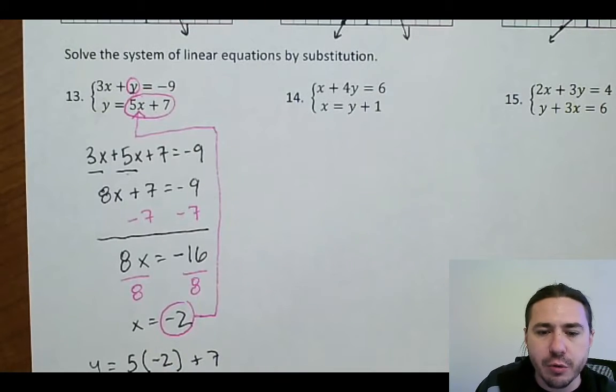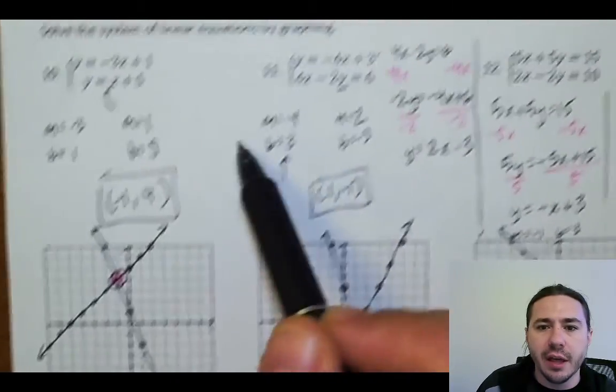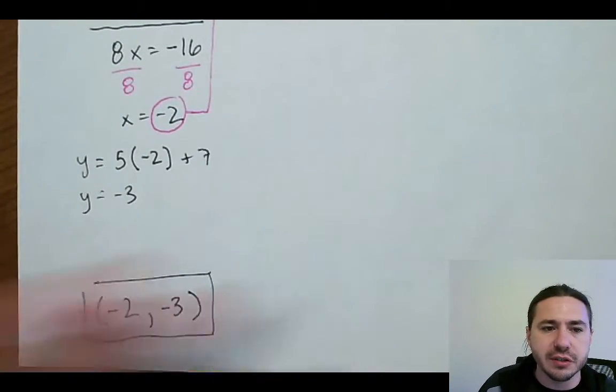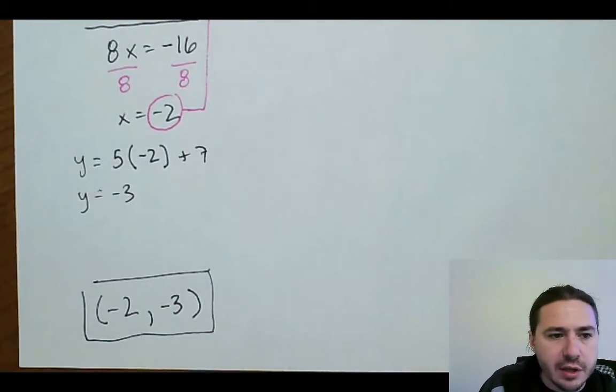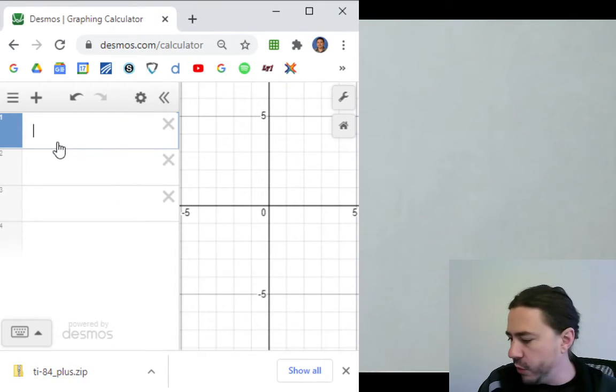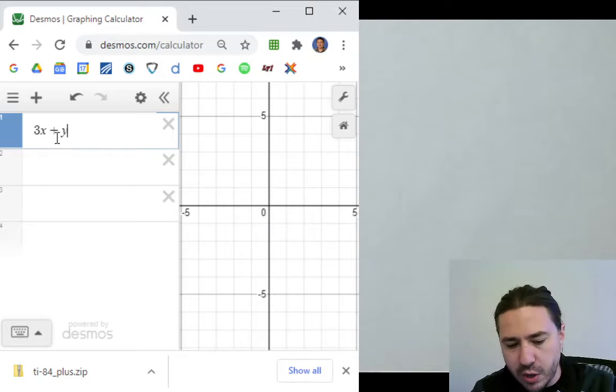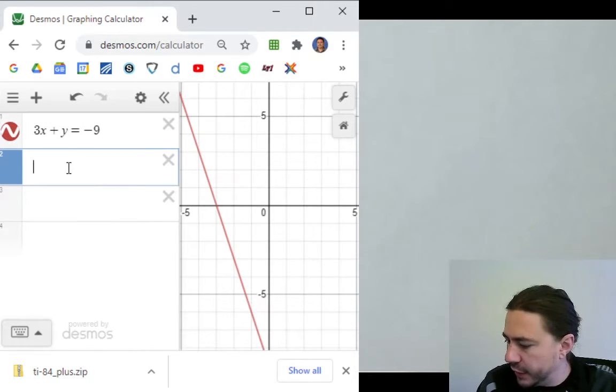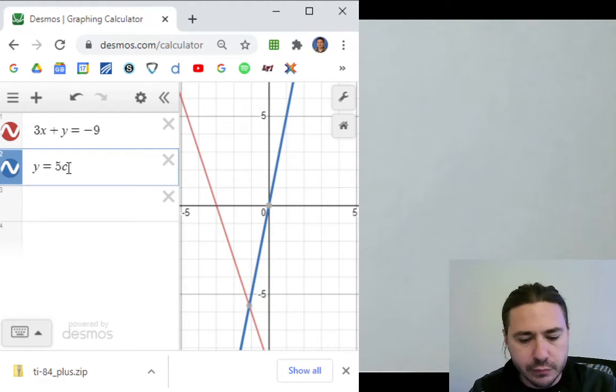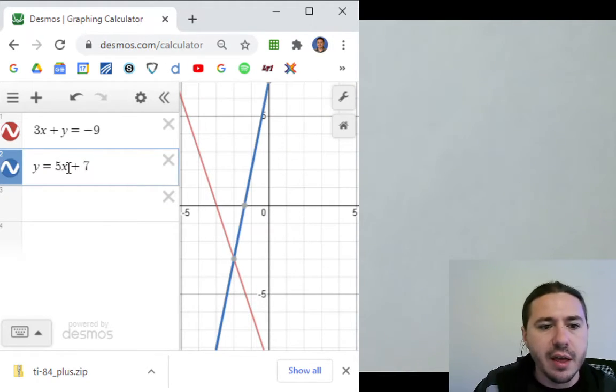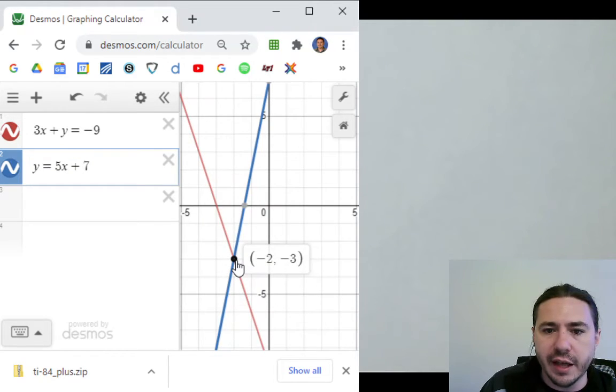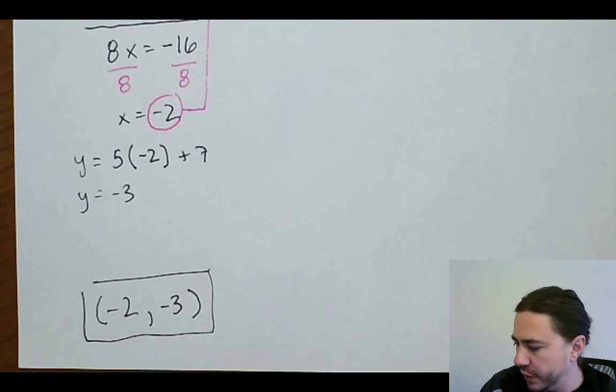Okay, so we're going to pull up Desmos real quick. I'm not going to go through all the TI graphing calculator steps. If you want to know how to find the intersection on the graphing calculator, go back and look at one of these questions, 10 through 12, and I go through those steps. So I'm just using this to check real quick for these substitution problems. So I'm going to, let's pull up Desmos. I'm going to type in both equations that I started with. 3x plus y equals negative 9. And let's see here. y equals 5x plus 7. Not c. 5x plus 7. And take a look. And we do get that intersection point of negative 2, negative 3. So we're good. And that's going to be the answer to number 13.